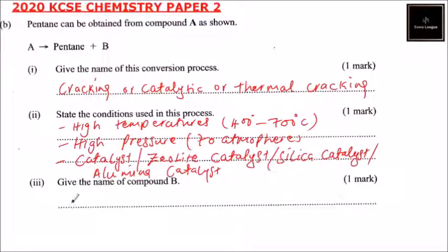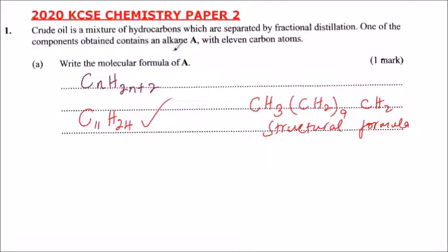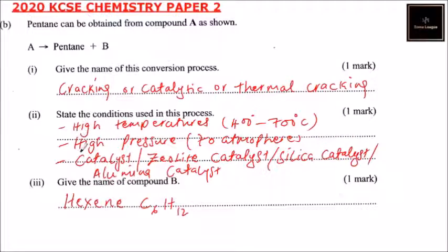Roman numeral 3: give the name of compound B produced from compound A. Compound B is hexene, whose molecular formula is C6H12. So that is product B obtained from compound A. Alkane A, once it goes through cracking, produces pentane and hexene.